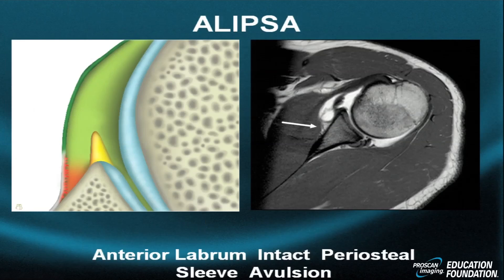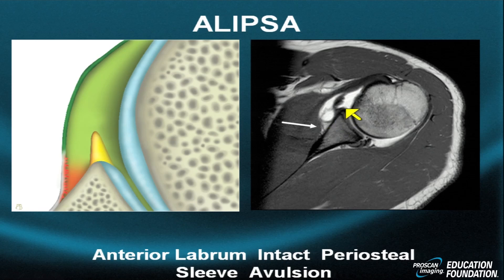Then finally, the elusive ELLIPSA. We have the ALPSA, but what's an ELLIPSA? An ELLIPSA is an anterior labrum intact periosteal sleeve avulsion — in other words, the anterior labrum remains intact but the periosteal sleeve is affected. There is your labrum — a bit diminutive, but present — along with a thickened middle glenohumeral ligament, a distended capsule with synechia inside, and the elevated periosteum with a triangular area of edema and hemorrhage, corresponding beautifully to the accompanying diagram. In summary, an ELLIPSA is a periosteal injury that is more medial in position with preservation of the labrum.